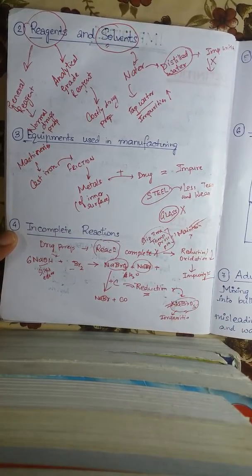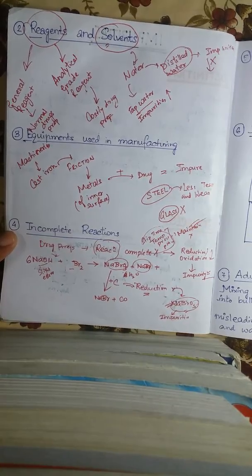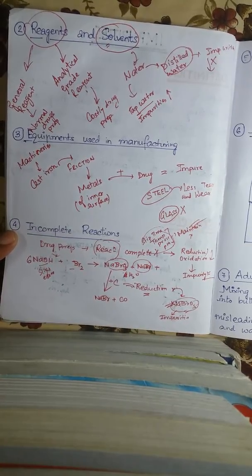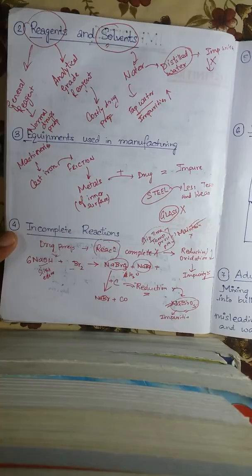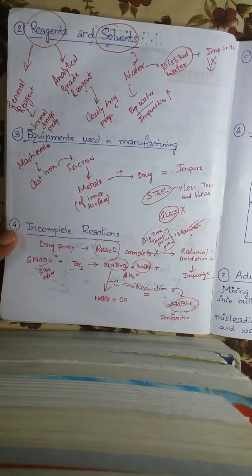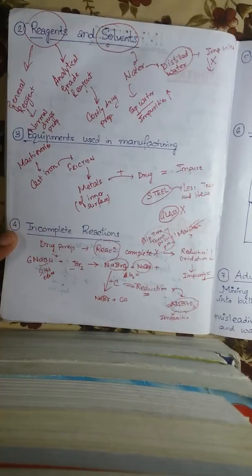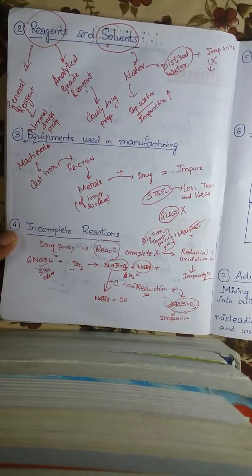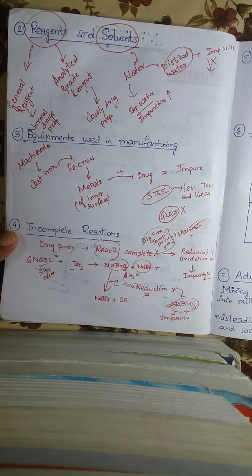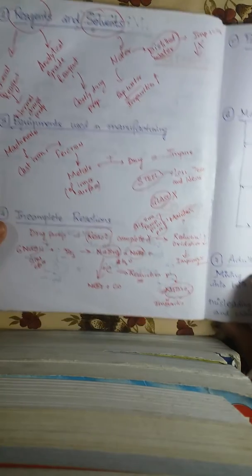It is very normal that if the reaction is complete but you do not maintain the time, temperature, or other factors, impurities can still arise. Some elements may not completely reduce or oxidize, and because of this they can create impurities.